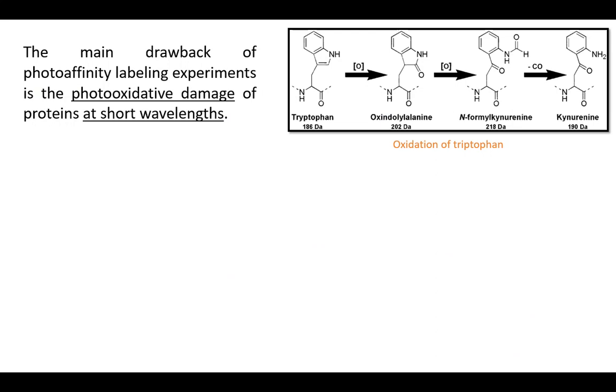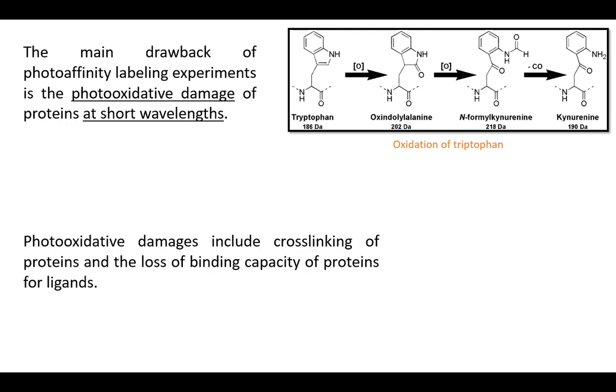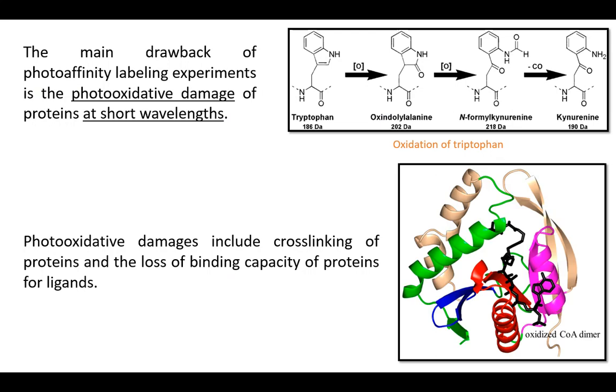Some photolabeling agents may cause problems at wavelengths in the visible region. Photooxidative damages include cross-linking of proteins and the loss of binding capacity of proteins for ligands.